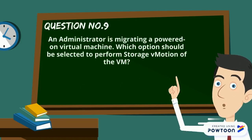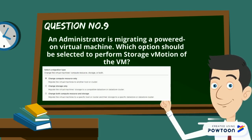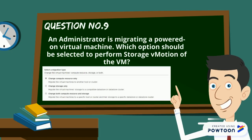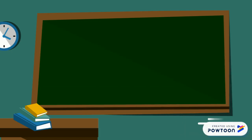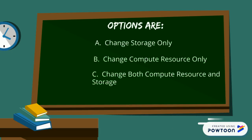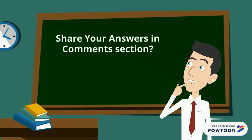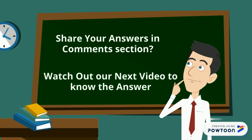Here is question number nine: an administrator is migrating a powered-on virtual machine. Which option should be selected to perform storage vMotion of the VM? The options are: change storage only, change compute resource only, change both compute resource and storage, or all of the above. Share your answers in the comment section or watch our next video to know the answer.